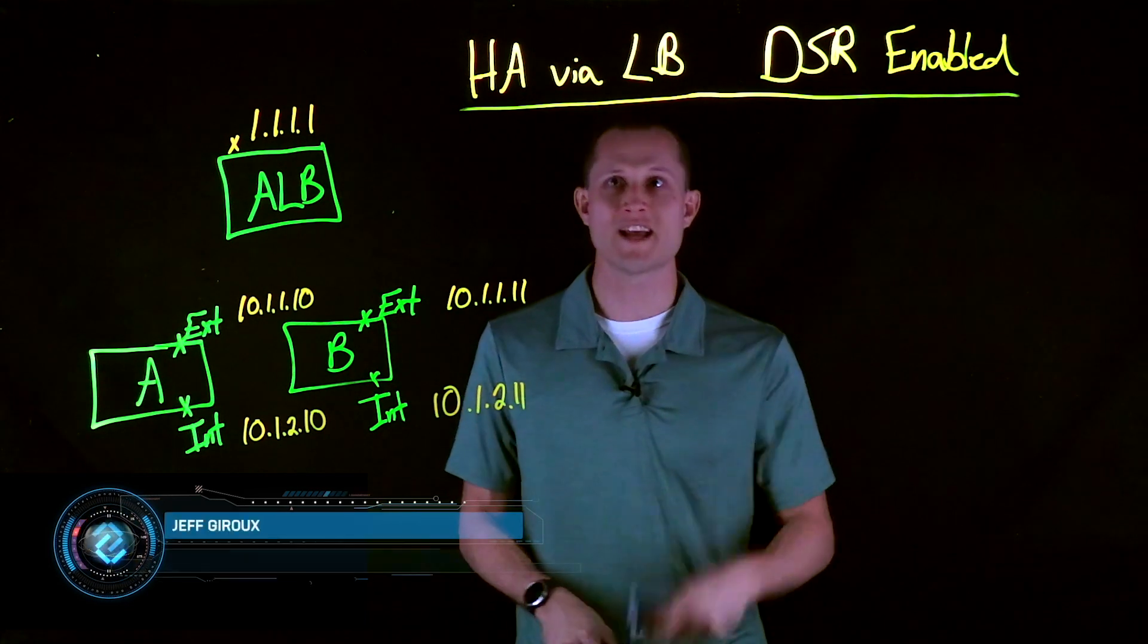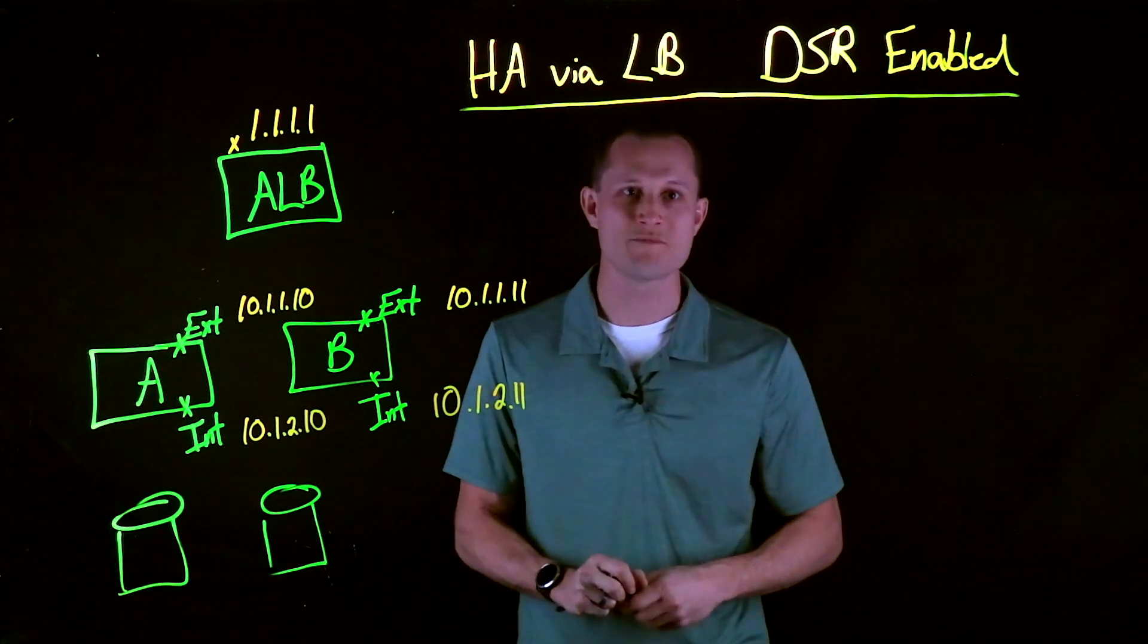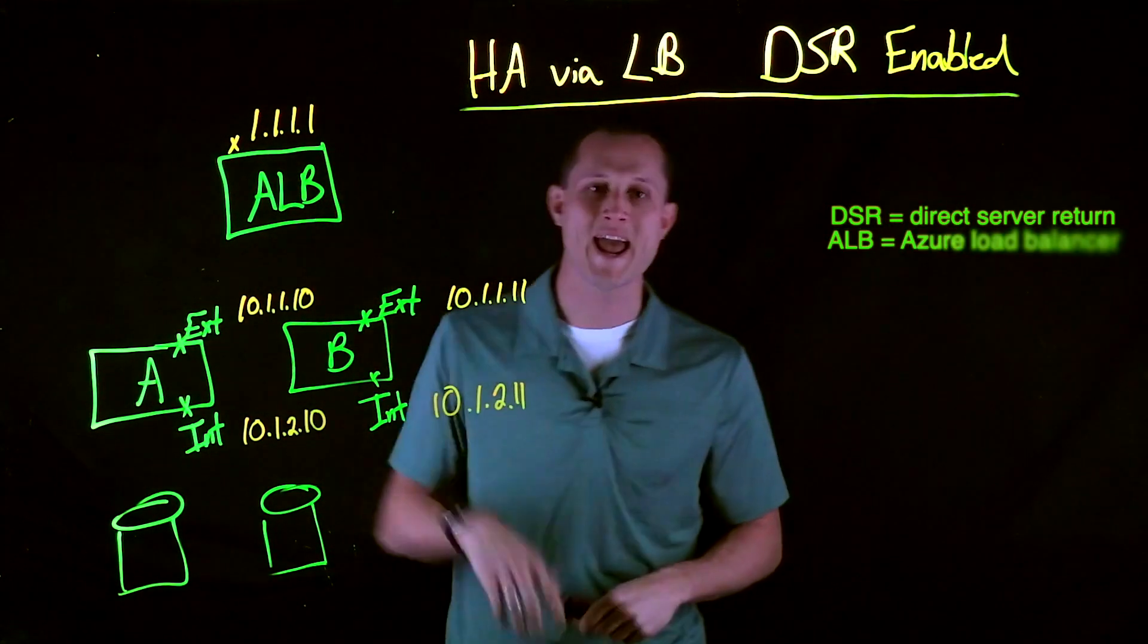Hello, my name is Jeff Giroux, and today I'm going to be covering an alternate option for HA via LB, which is to have DSR enabled within the ALB tier.